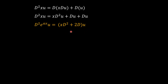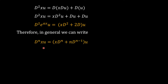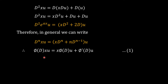Observing both expressions, we can generalize the result as: D^n(xu) = x·D^n(u) + n·D^(n-1)(u). We then generalize in terms of the φ function: φ(D)(xu) = x·φ(D)(u) + φ'(D)(u). We call this equation (1).